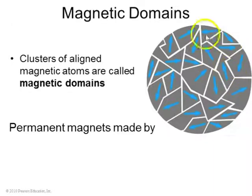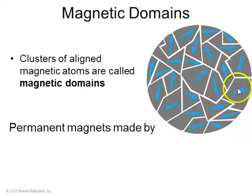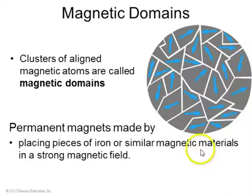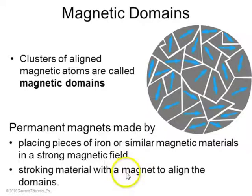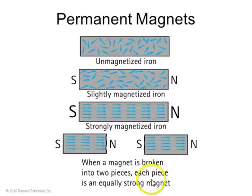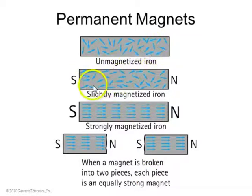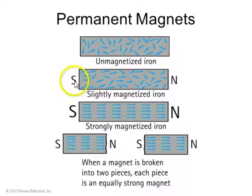A piece of iron has lots of different domains, each with some random direction of the magnetic field. A permanent magnet is when you somehow align these magnetic domains, either by placing them in a strong magnetic field or by stroking the iron to align the domains and make a magnet. Here's some unmagnetized iron — all the domains are in random directions. If they start to align more towards the right, you get an N pole on the right and an S pole on the left. The more they're aligned, the stronger the magnet.